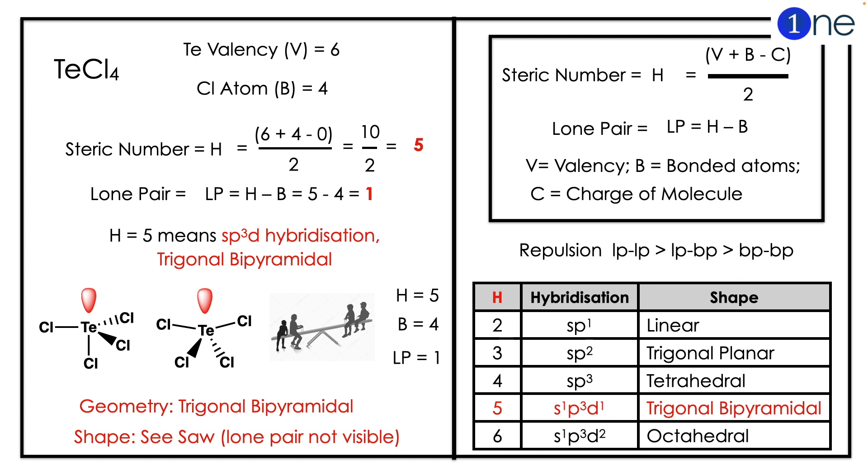To find the hybridization, you should know the steric number, which is H equals (V plus B minus C) divided by 2. The tellurium valency is 6, and chlorine is 4, so the steric number will be (6 plus 4) divided by 2.